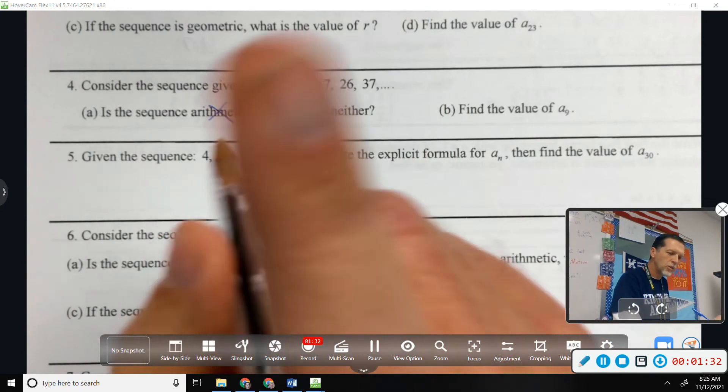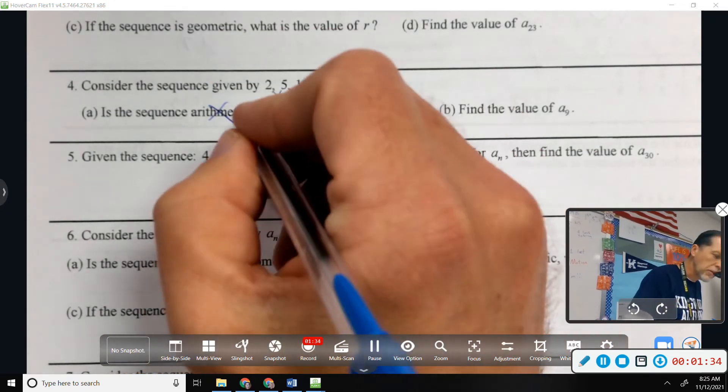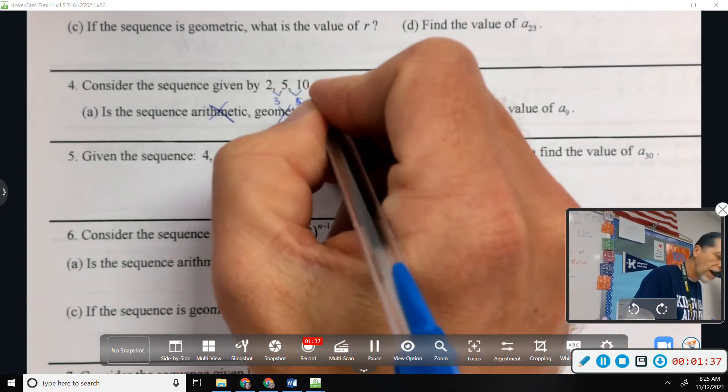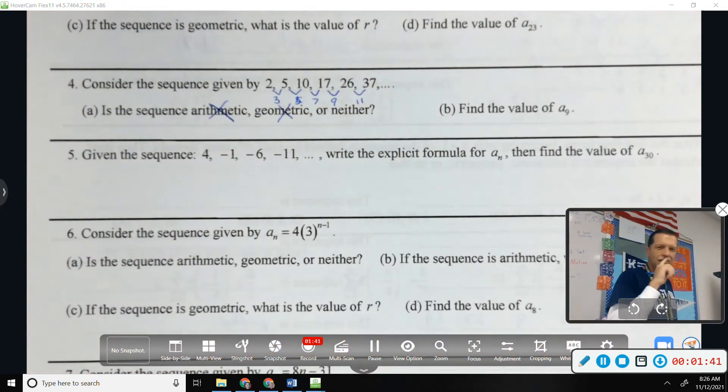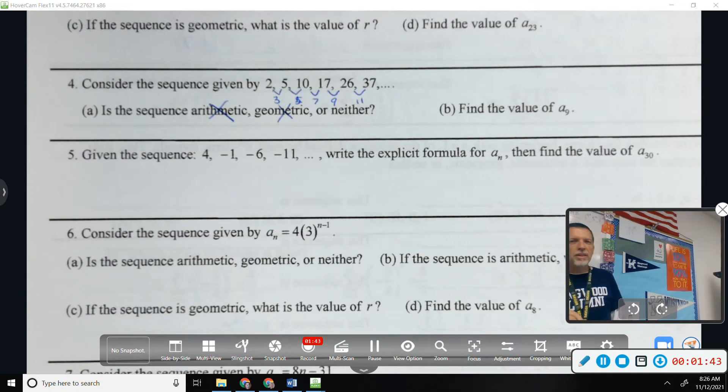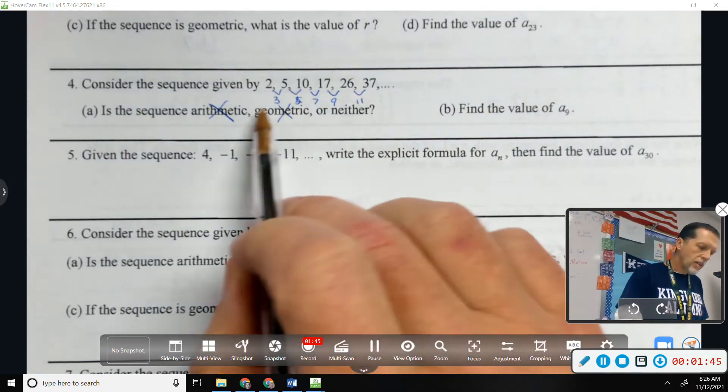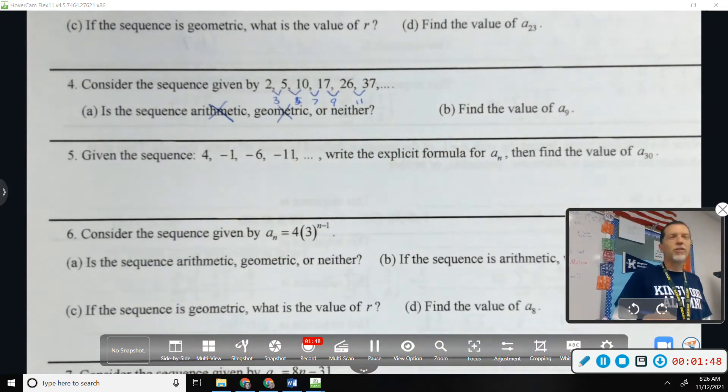But we sort of almost discovered something when we were thinking about arithmetic, because this was three, five, seven, nine, eleven. So something's going on here. We're adding an extra two every time.